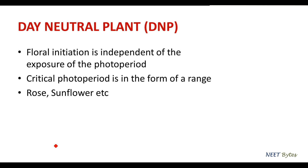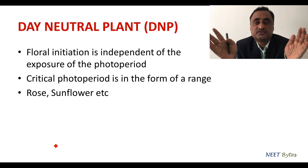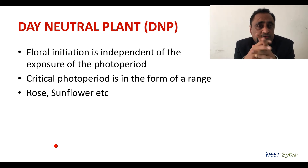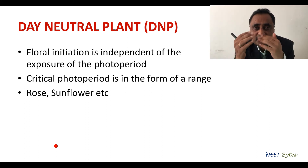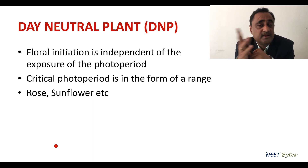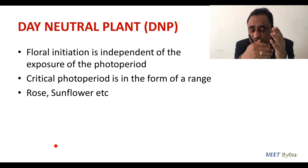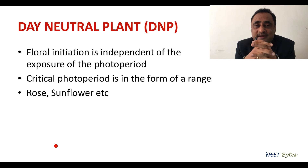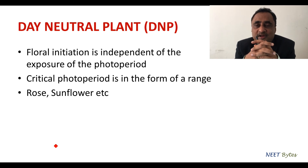We have one more group called day neutral plants. In day neutral plants, the critical photoperiod is not a fixed length but rather a range — for example, ranging from 8 hours to 14 hours. Since the critical photoperiod is a range, whether it is winter or summer, the day length will always fall within that range. So these plants flower throughout the year. Rose and sunflower are typical examples of day neutral plants.